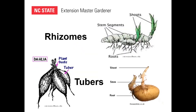Rhizomes are lateral stems that are barely underground or can be a little bit deeper. The most common one everybody knows is iris — it is a stem with roots coming down, food storage, and shoots coming up where your flowers will be.